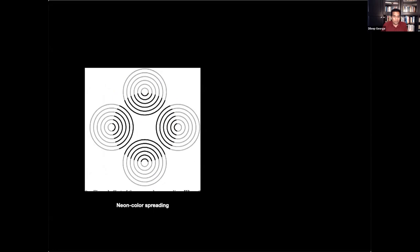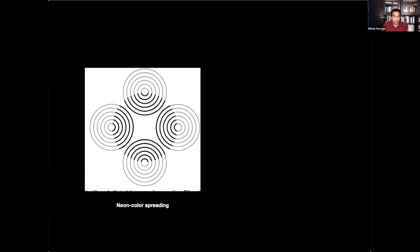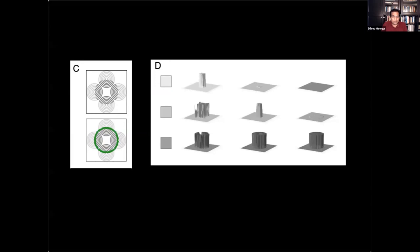And you can also do that for things that have a combination of subjective contour effect and surface models. For example, neon color spreading where the boundaries are hallucinated and also the color is hallucinated. In our system, for example, you can replicate many of the things that are observed in biology, where the feedback computation first settles for the contours and then the contours kind of act as boundary for filling in the surface information. And that is why the color settles later. And the outer color kind of bleeds into the inner segments.